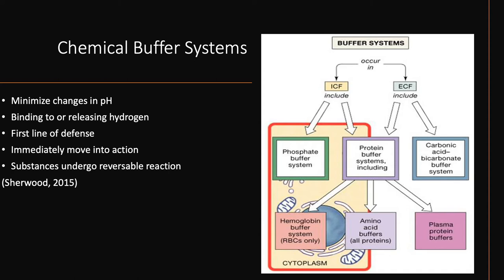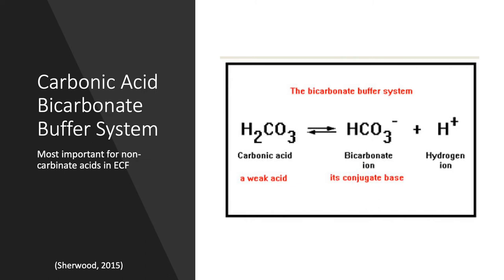Now let's take a closer look at the carbonic acid-bicarbonate buffer system. This is the most important buffer system for non-carbonic acids and extracellular fluid. This system is readily available for maintaining normal pH values in the body due to an abundance of carbonic acid and bicarbonate. It is also effective because it is highly regulated by the kidneys and the respiratory system. Looking at the equation from left to right, carbon dioxide provided by the respiratory system combines with water to form carbonic acid, which is broken down into bicarbonate and hydrogen. This reaction occurs when the plasma hydrogen concentration falls below normal levels.